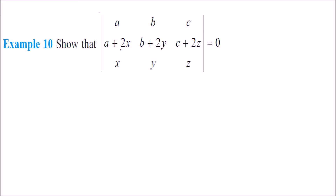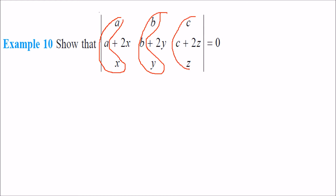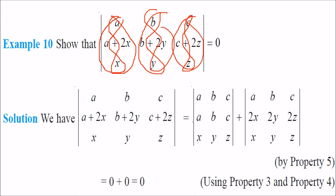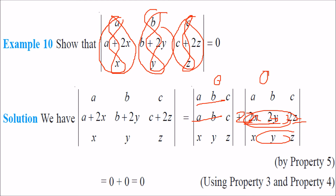To show a determinant equals 0 using Property 5, we split it into two determinants. For the first, taking a·a·x, b·b·y, c·c·z: these two rows are similar, so this is 0. For the second, taking a²·x·x, b²·y·y, c²·z·z: if we take xyz common from the second row, rows become equal, so it is also 0. Thus 0 + 0 = 0.